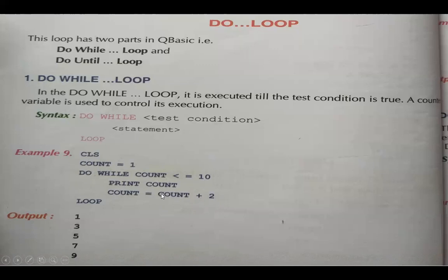3 plus 2 is 5, 5 is less than 10, condition tests true, 5 prints. 5 plus 2 is 7, condition tests: 7 is less than 10, 7 prints. 7 plus 2 is 9, 9 is less than 10, 9 prints. 9 plus 2 is 11; now test: 11 is not less than 10, so loop breaks. This is the do while loop — it executes only when the condition is true.